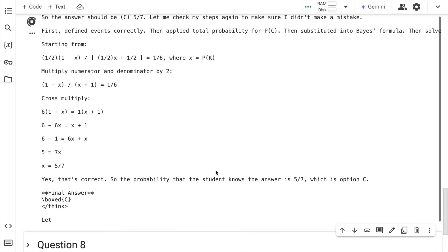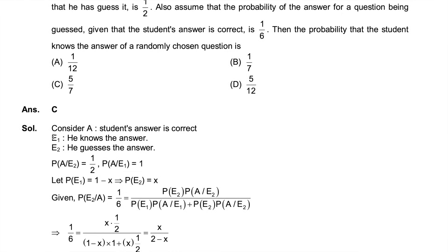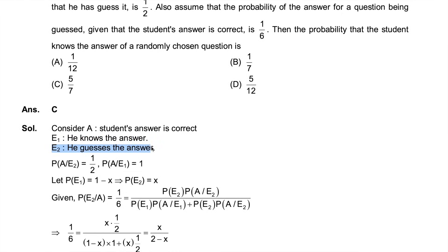Finally, it is telling us that the answer is 5/7. Let's validate this using an answer key as well. Based on what I see, both the answers are correct. Again, DeepSeek R1 is doing an amazing job.